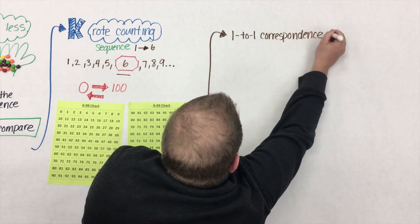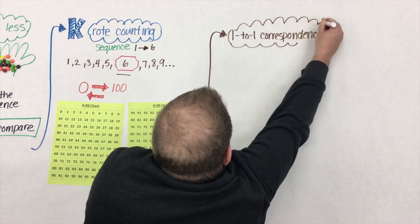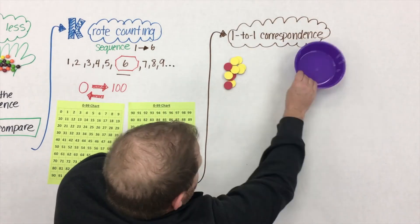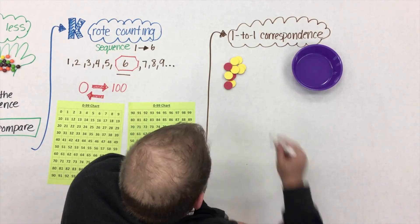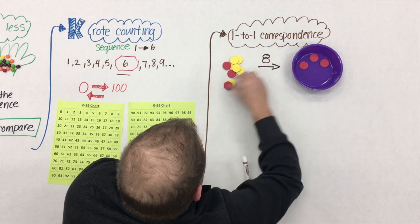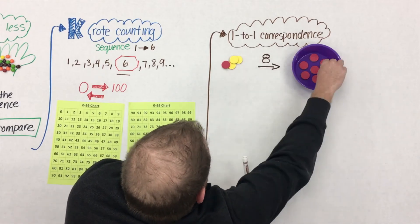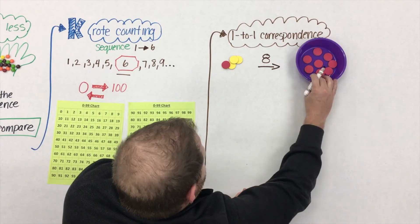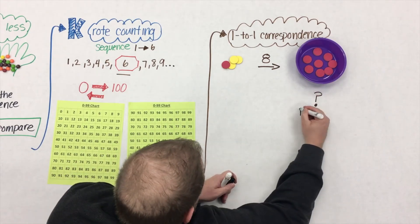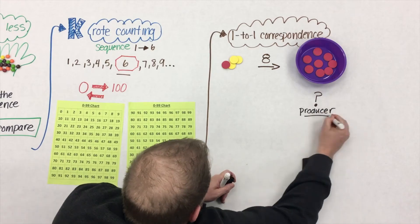As students are working on this idea of rote counting, we begin to introduce this idea of 1 to 1 correspondence. And to be honest, 1 to 1 correspondence is much more than simply tagging numbers to objects. Here's an example. If we ask a student to count 8 and place them in the bowl from a set, and they're able to do that, they're a producer of counting. They're able to do that 1 to 1 tagging to 8.